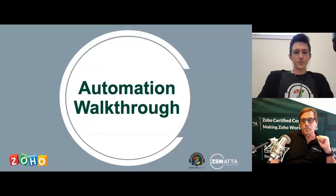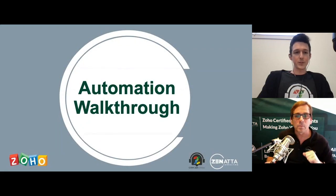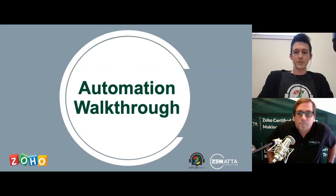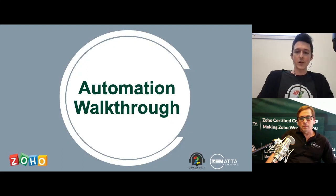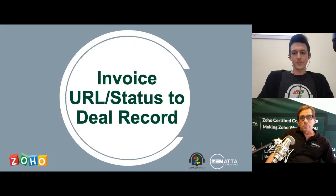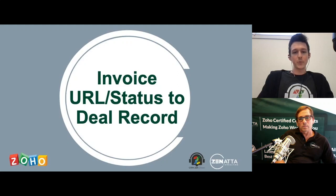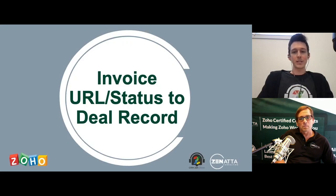One final automation: once the invoice is marked as paid, we apply a new stage defining it as Closed Won. Once we have payment, that negotiation and review is complete and we've won the deal. Now I'll walk through some of these automations at a base level, highlighting where the settings are. First, we'll cover the function Brett mentioned: updating the invoice URL and status into the deal record from Zoho Books.